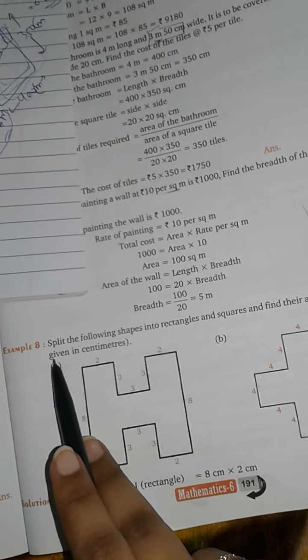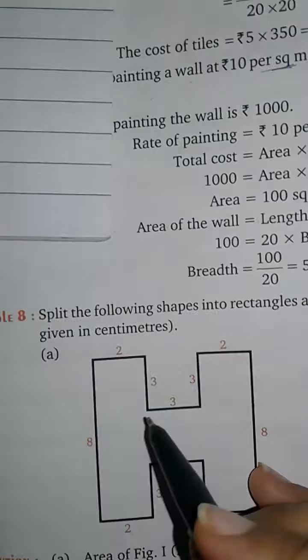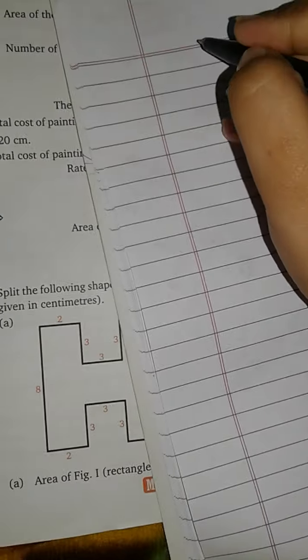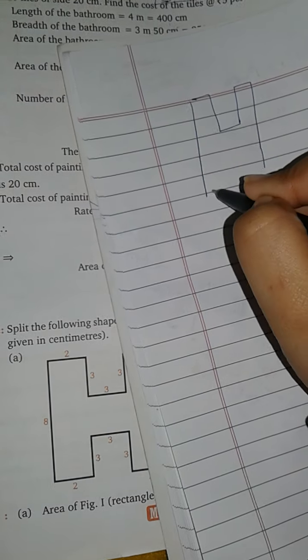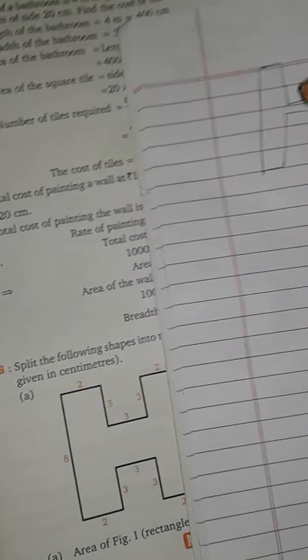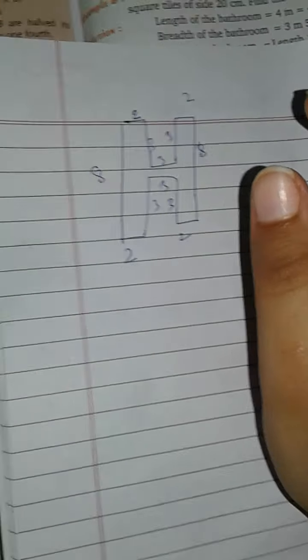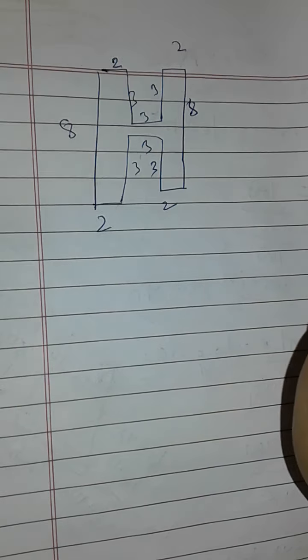Next, question number 8: split the following shapes into rectangles and squares and find their areas. First, let's draw the figure — an H shape is drawn with dimensions. We divide the H-figure into rectangles and squares to find the total area.